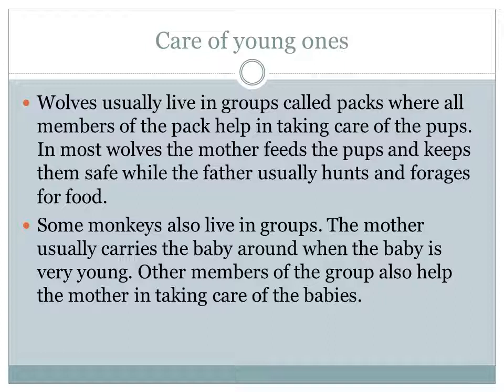This is the end of the reproduction in animals chapter. Let us do a quick recap. Animals also reproduce — one of the important features of living things is to produce their own babies. Animals reproduce by two methods: first, by laying eggs; second, by giving birth. Animals that reproduce by laying eggs are called oviparous animals. Animals that reproduce by giving birth are called viviparous animals.